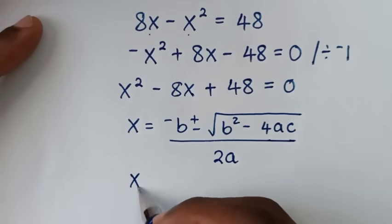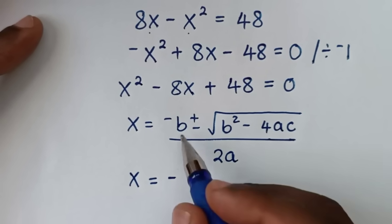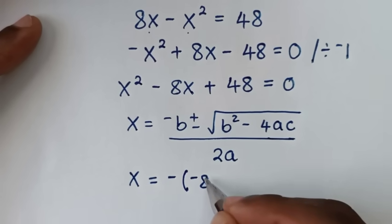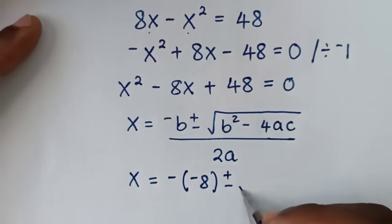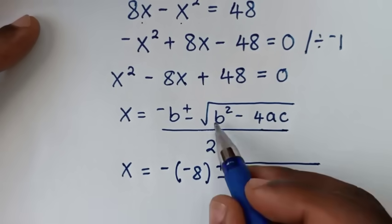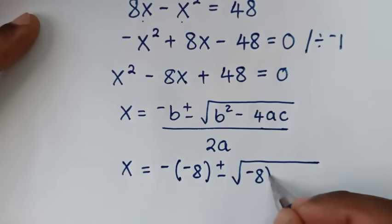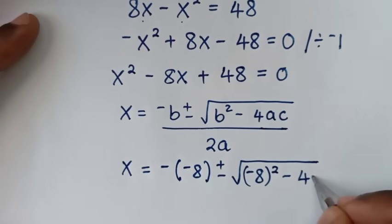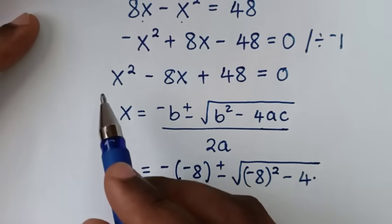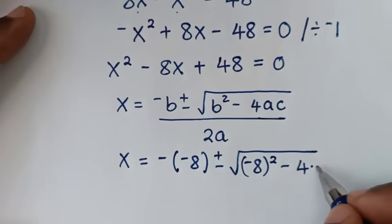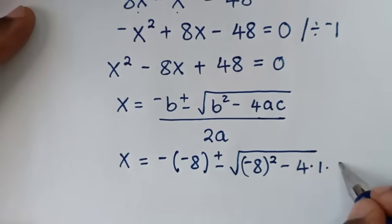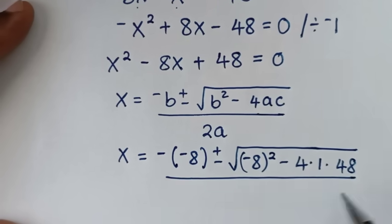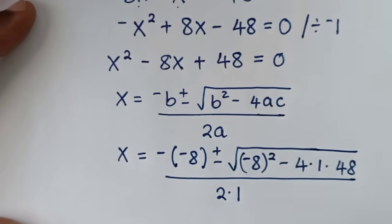So it will be x is equal to negative b — b it is negative 8 — bracket plus or minus square root of b squared, it will be negative 8 bracket squared. Then minus 4 times a, a is 1, times c is 48. So times 1 times 48, then over 2 times a, which is 1.